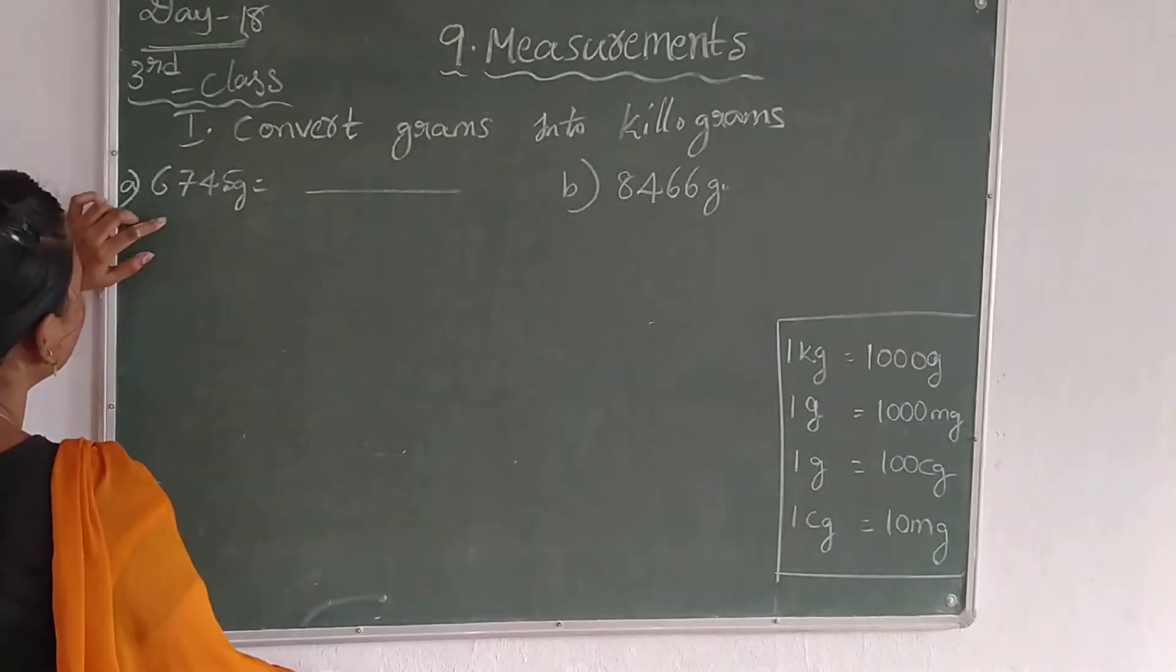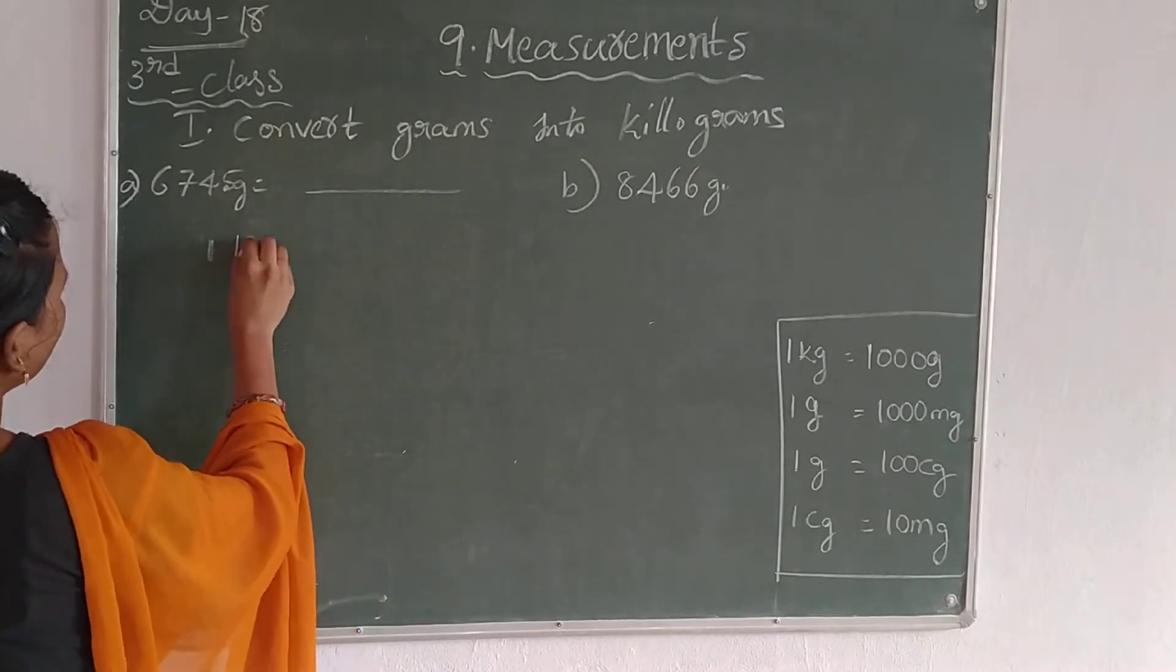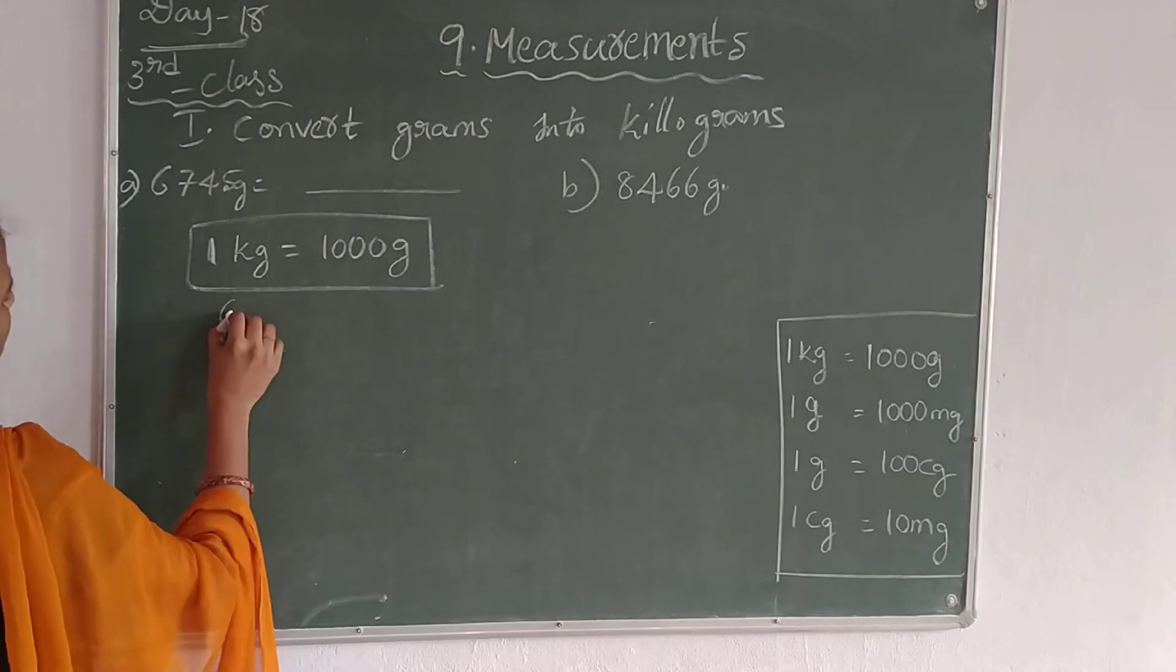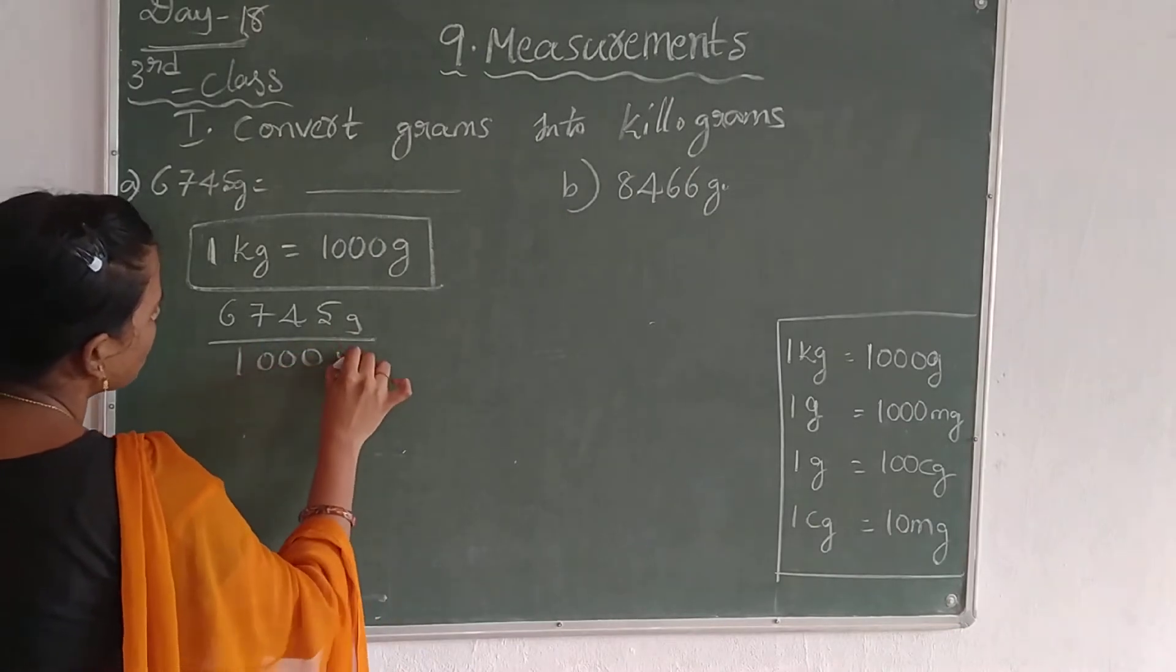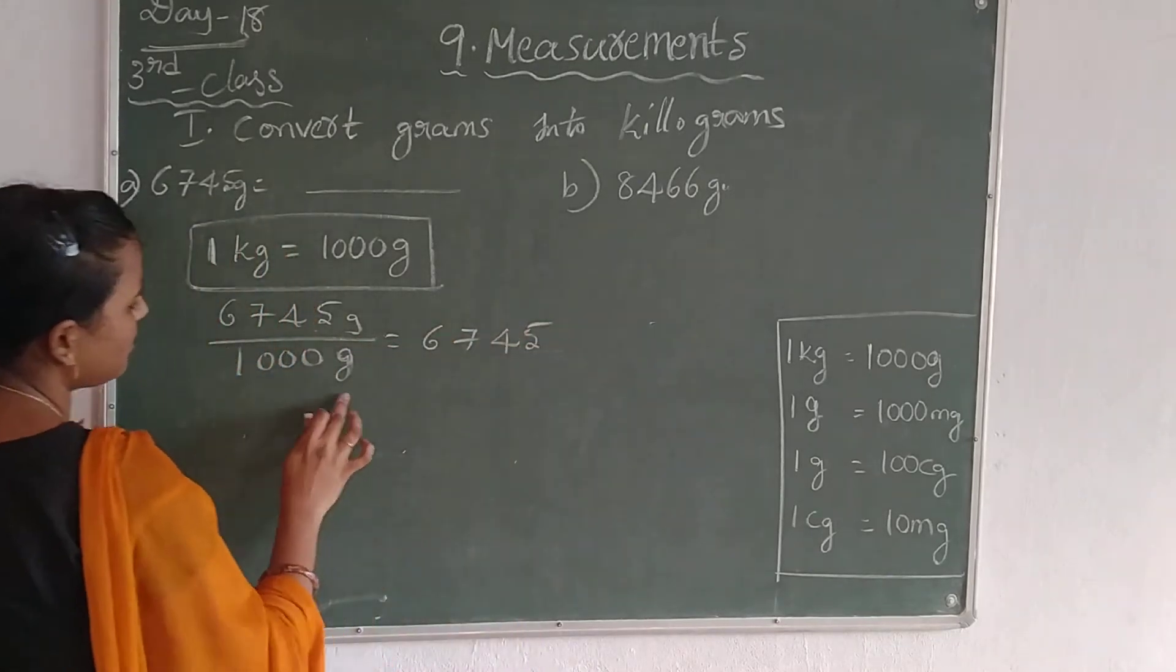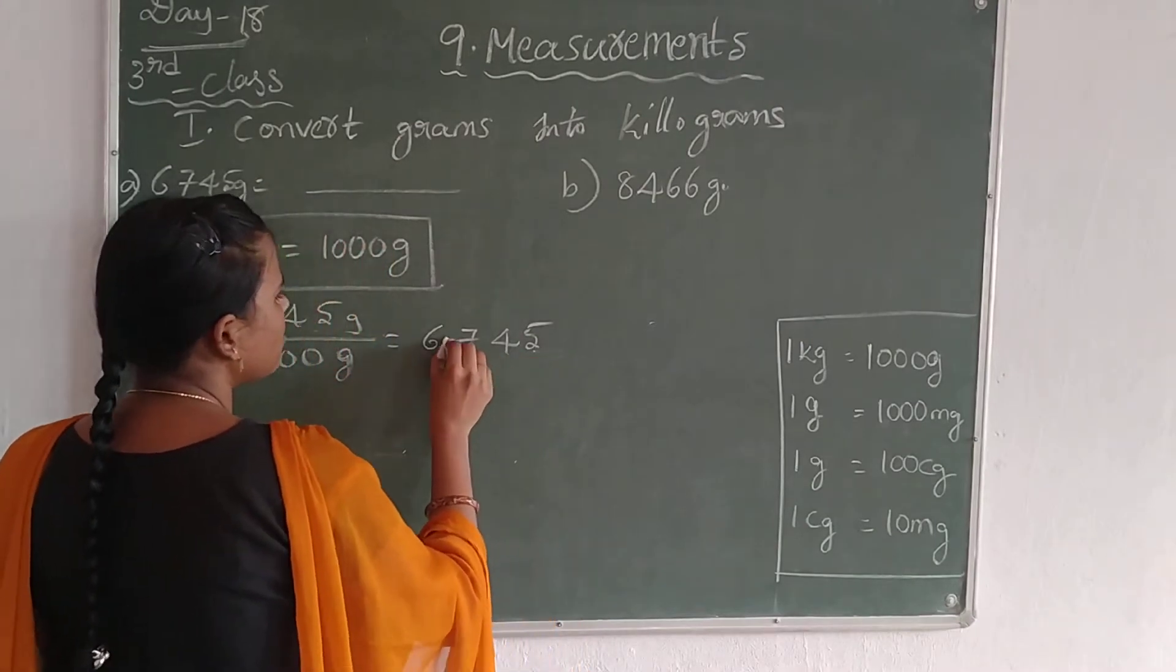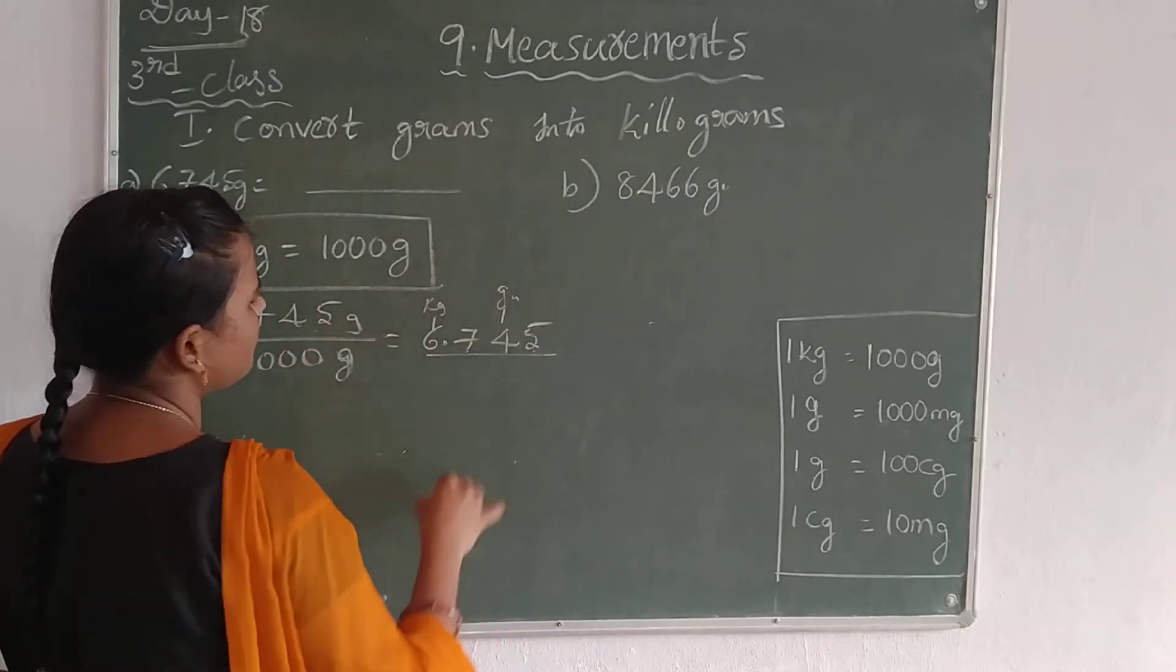Let's see the first sum: 6745 grams. Convert this into kilograms. 1 kg equals 1000 grams, so 6745 grams by 1000 grams. The simple way is write down the numerator 6745, and see the denominator—how many zeros are there? Here we have 3 zeros. Count right to left 3 numbers: 1, 2, 3 digits. Take a point here. Here this is kilogram, this is grams.